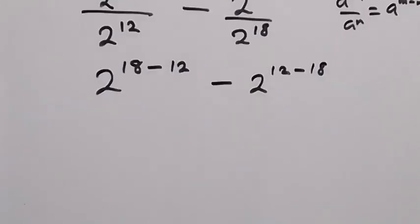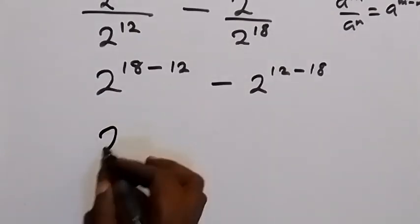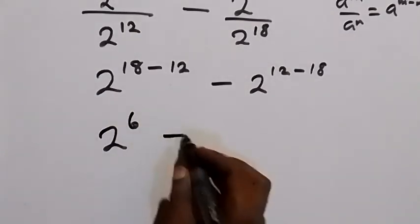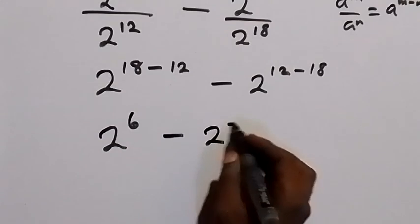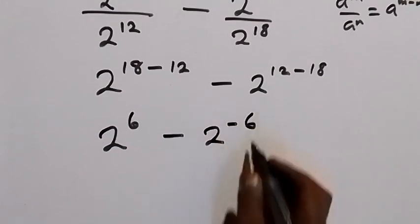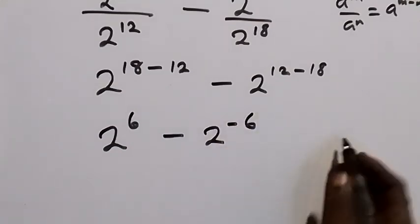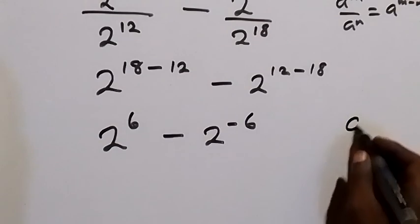From here this gives us 2 raised to power 6, and from here this gives us 2 raised to power 6, minus 2 raised to power negative 6.